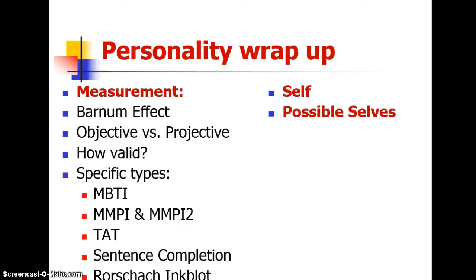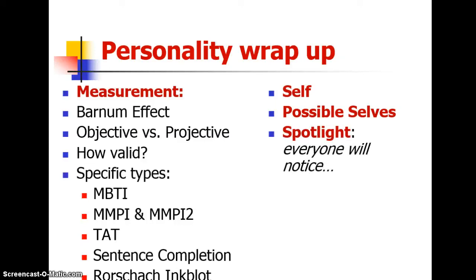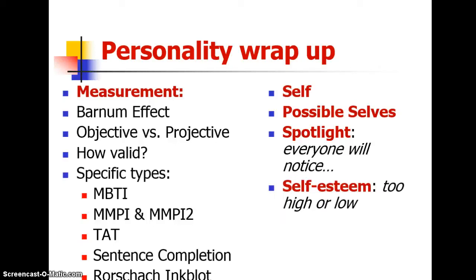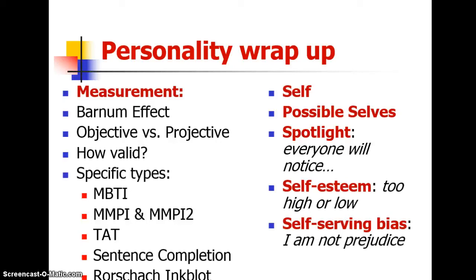Related to self: know possible selves — the selves we are versus the selves we want to be — and the spotlight effect, where you feel everybody will notice something about you. Self-esteem is an overall general feeling, high or low. Self-serving bias, a repeat from our cognitive unit, means we tend to see ourselves a little better than we are to protect our egos, and there is a cultural difference in self-serving bias.